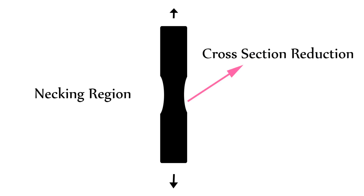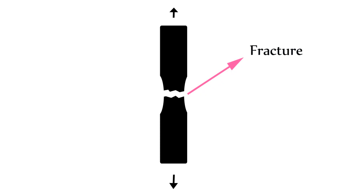Let's do a tensile test. Before we do a tensile test, we can easily identify large properties. If you take a specimen and apply force, you get necking and a cross-section reduction. This is the tensile test process.